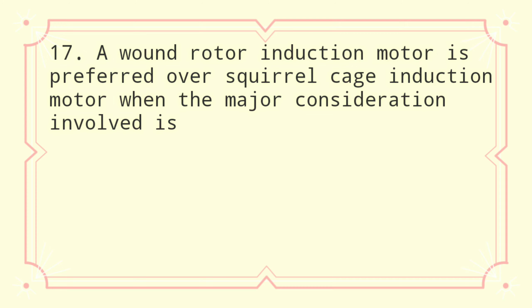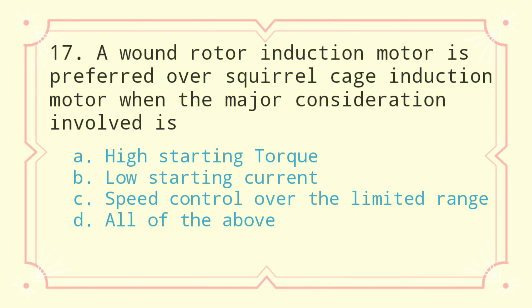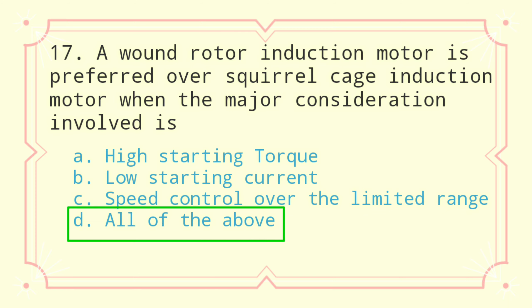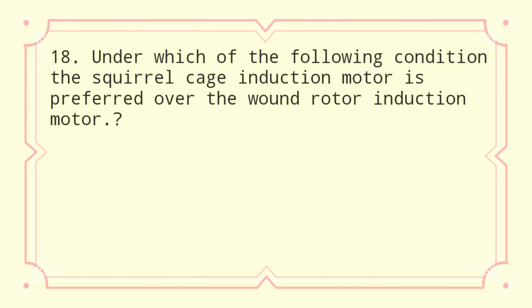Question 17: A wound rotor induction motor is preferred over squirrel cage induction motor when the major consideration involved is: a) high starting torque, b) low starting current, c) speed control over a limited range, d) all of the above. The correct answer is all of the above.